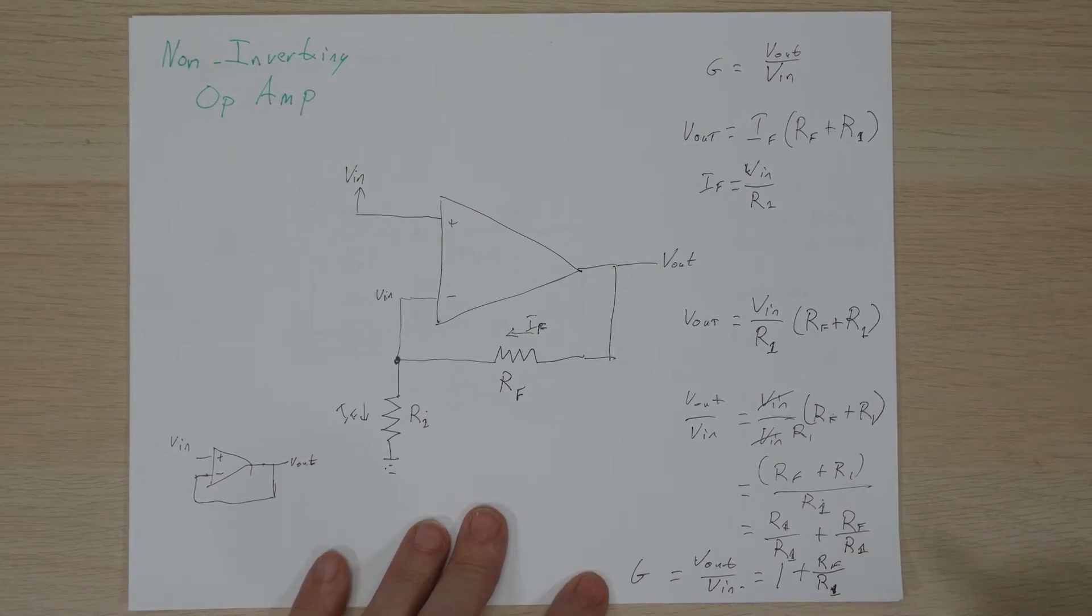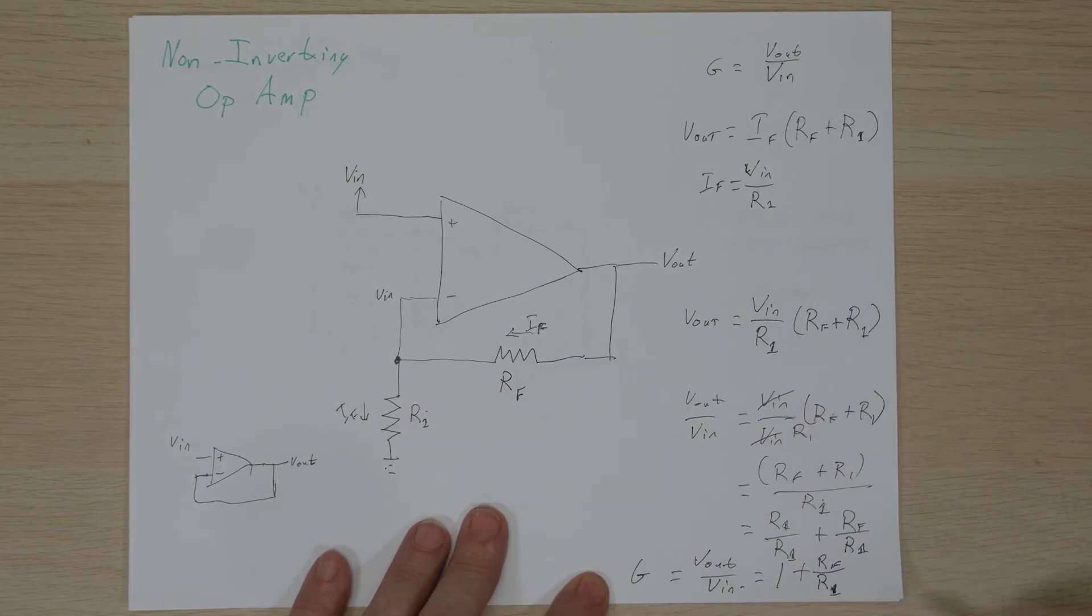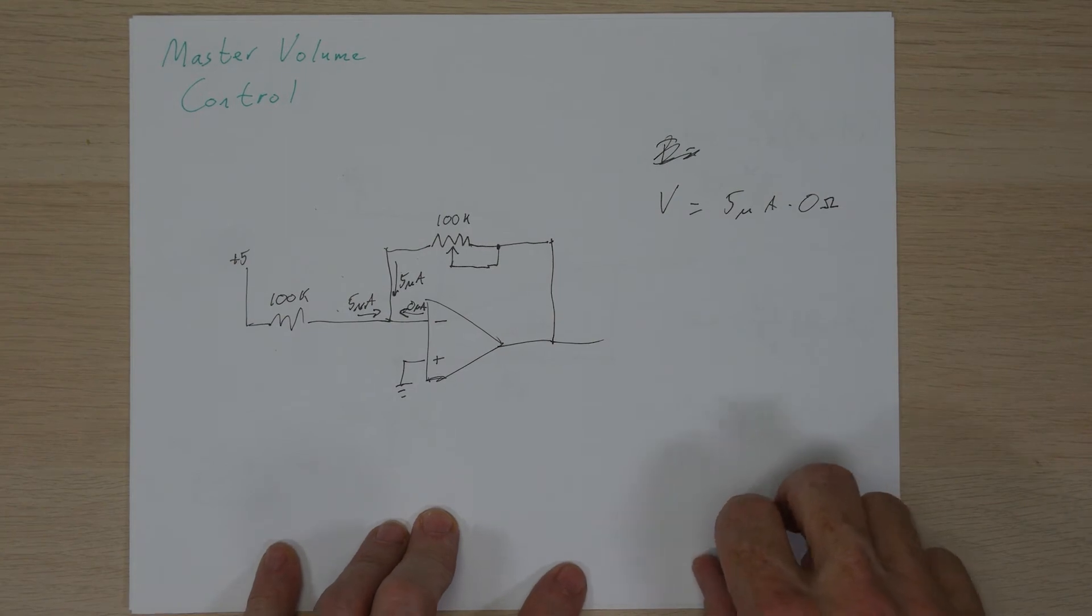So why does this matter to us? Well, what you'll see here is that the gain is always going to be one plus the ratio of these two resistors. And in that case, it means it will never be less than one. And so why is that a problem for our mixer circuit? Well if we go back and we look at how we were doing the master volume control in our circuit,